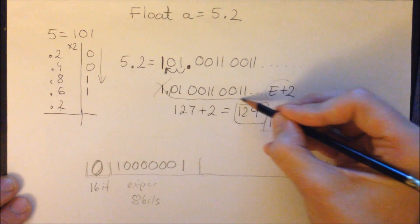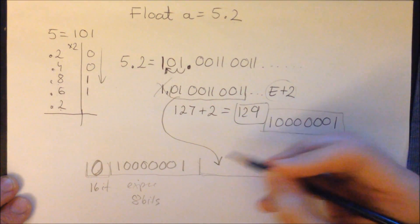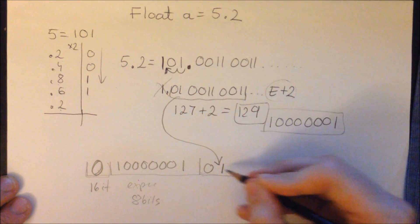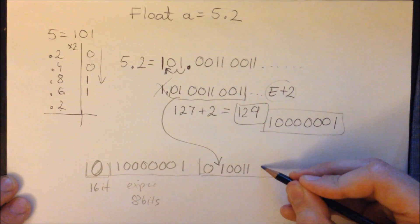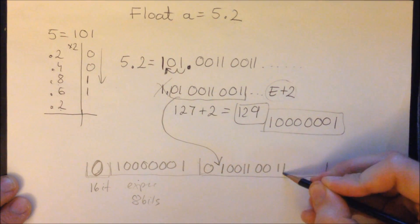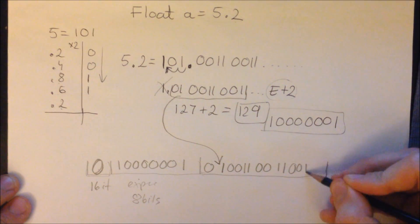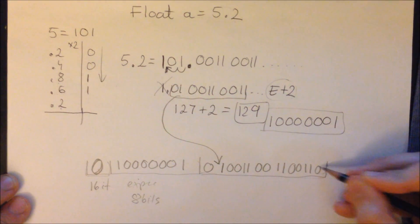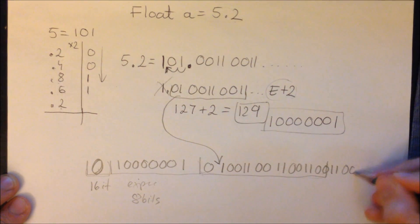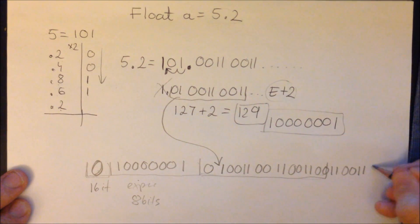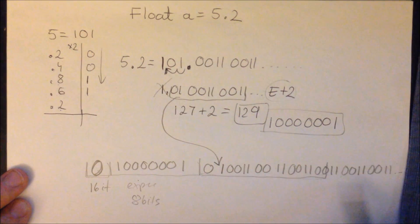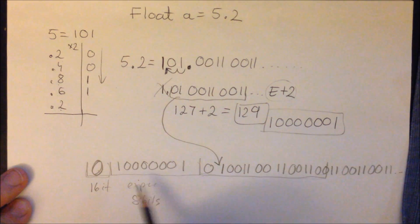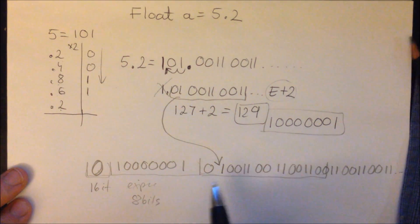So we are inserting the fraction part here: 0, 1, 0, 0, 1, 1, 0, 0, 1, 1, 0, 0, 1, 1, 0, 0, 1, 1, 0, 0, 1, 1, 0, 0, 1, 1. This is 1 bit for the sign, 8 bits for the exponent, and the fraction part has 23 bits.